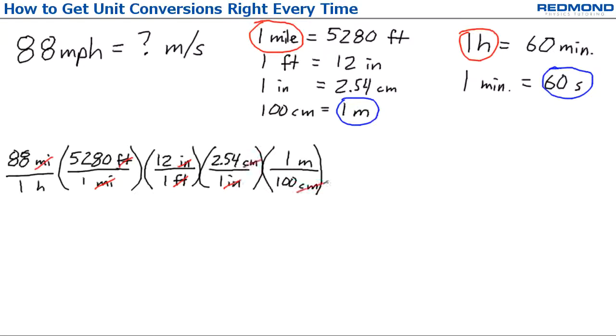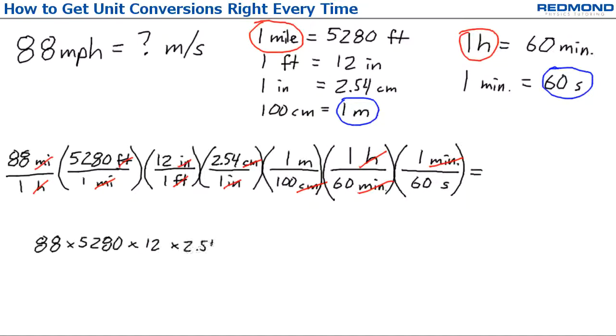But I still need to convert hours to seconds. The hours were originally on the bottom, so I need to put them on the top in the conversion factor to cancel them out. That means I need to put minutes on the bottom here, and then minutes on top and seconds on the bottom for the last conversion factor. This all works out to 88 times 5280 times 12 times 2.54 divided by 100, divided by 60, divided by 60, and gives 39.3 meters per second.